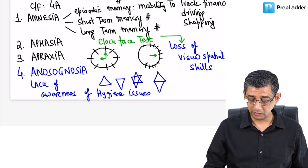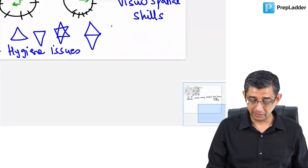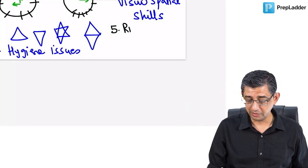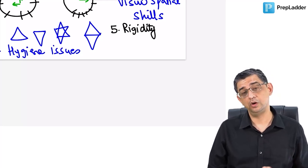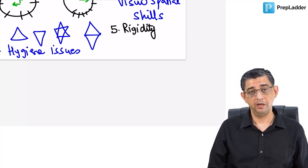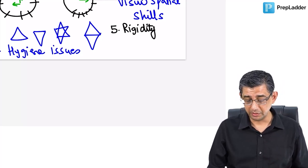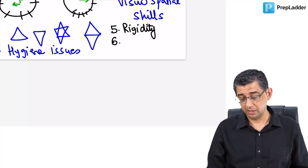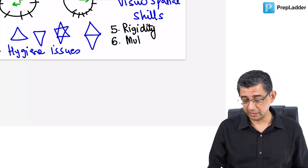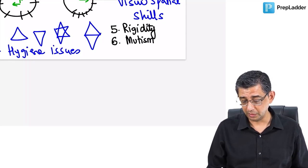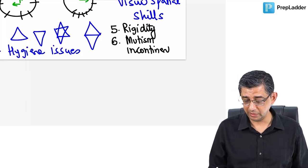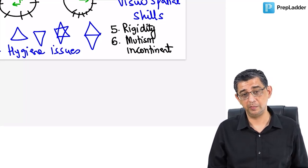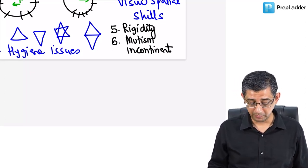In the later stages of this patient, there might even be development of rigidity. Not the classical rigidity you encounter in Parkinson disease, the cogwheel type or lead pipe type, but yes rigidity will be written in the literature. The person might actually be totally mum. He will be obviously incontinent. He might write incontinent patient, and then the person will become totally bedridden.